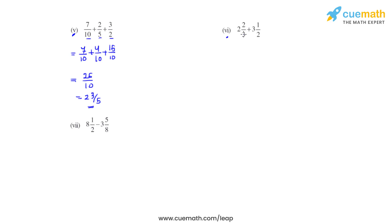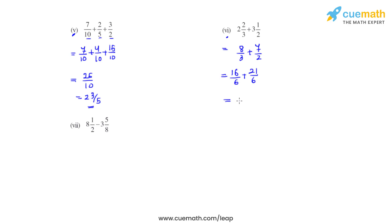Coming to the sixth bit, we have mixed fractions: 2 and 2 thirds, and 3 and a half. We first convert them into improper fractions, getting 8 over 3 plus 7 over 2. The LCM of 3 and 2 is 6. To get denominator 6 for the first fraction, we multiply numerator and denominator by 2, giving 16 over 6. For the second fraction, we multiply by 3 to get 21 over 6. Adding the numerators gives 37 over 6, which is an improper fraction. Converting to a mixed fraction gives the answer as 6 and 1 sixth.